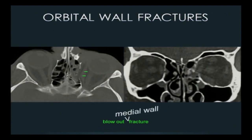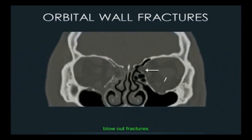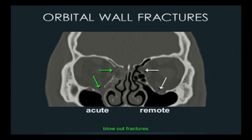We can have patients with both medial orbital wall and floor fractures. On the patient's left side with no hemorrhage in the sinuses, that's the remote fracture. But it's a Saturday night in New York, so we have the matching acute injury on the patient's right side. He was hit by a lefty tonight and by a righty before — our typical Saturday night special.